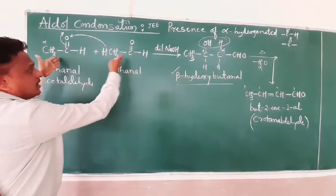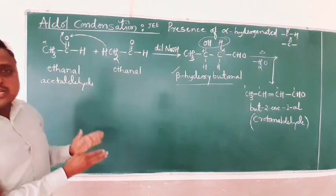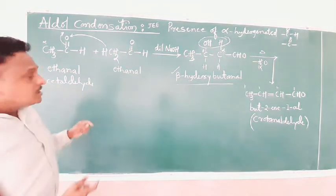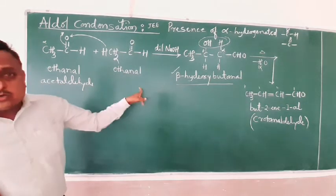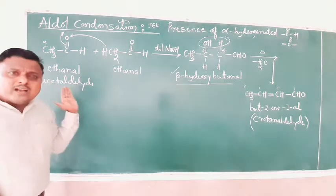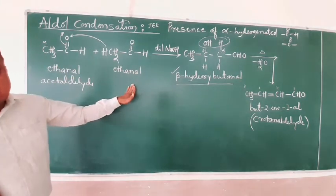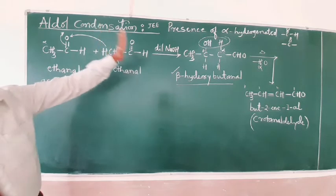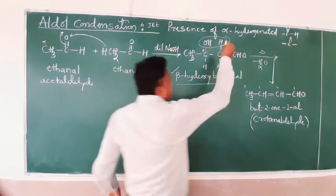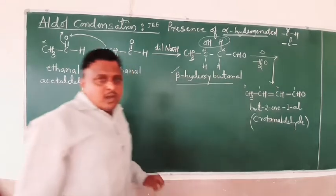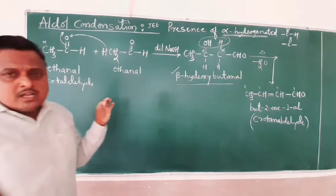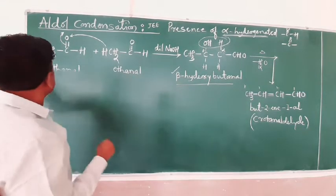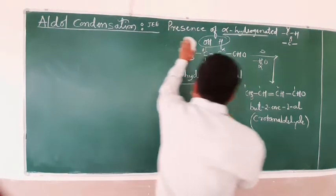Keep in mind: in simple aldol condensation, we use two similar aldehydes. If you use different compounds, it extends to cross-aldol condensation — you can use one aldehyde and one ketone, or one alpha-hydrogenated compound and one non-alpha-hydrogenated compound, which is also called cross-aldol condensation.